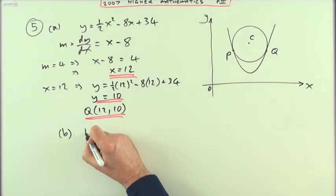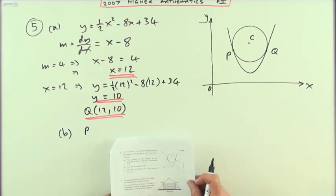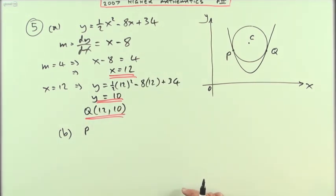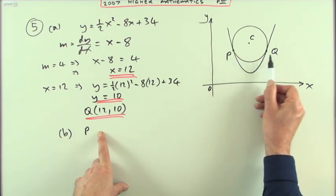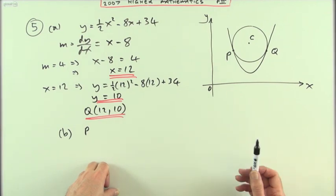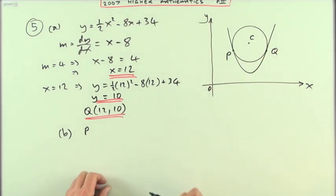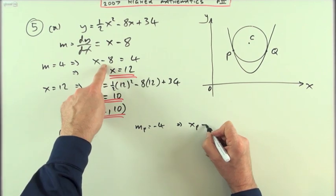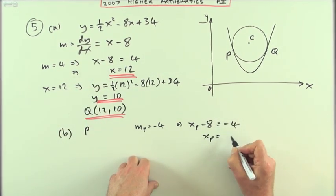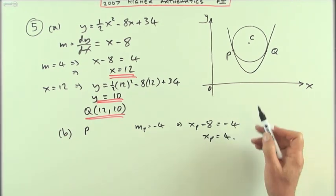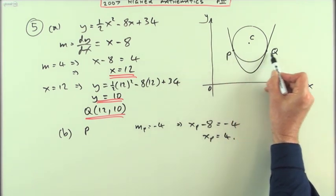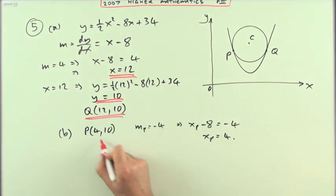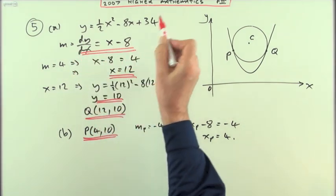Part B: find the coordinates of P. The diagram is symmetrical, so this shouldn't be too bad — and there are only two marks for this. The gradient at P would have to be negative 4 by symmetry. So x minus 8 equals negative 4, meaning the x coordinate of P is 4. Since it's symmetrical, P must be at the same height, so P is the point (4, 10).